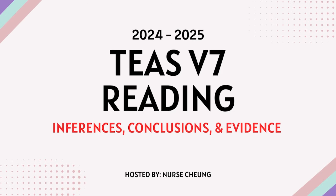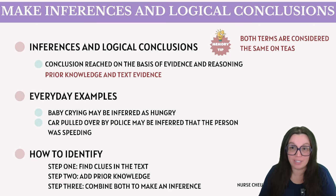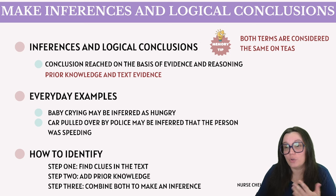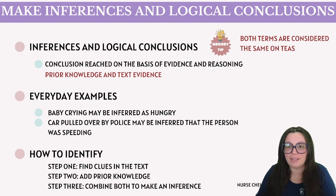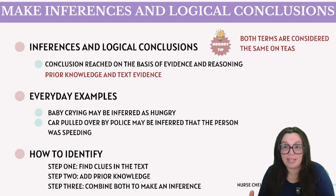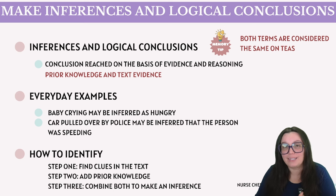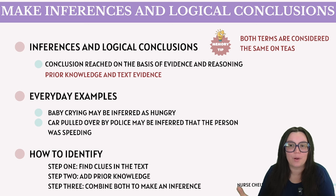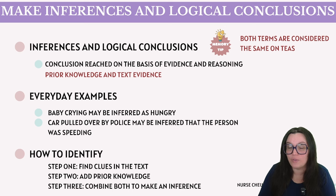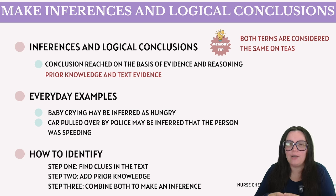Next, let's talk about making inferences and logical conclusions. An inference and drawing a logical conclusion is essentially a conclusion drawn by combining evidence and logical reasoning — both terms are considered the same on the TEAS. In our daily lives, we often unconsciously infer things using cues in our environment. For instance, you might deduce that a baby is hungry if they're crying, or that someone was speeding if they were pulled over by police. To apply this skill in reading: first, identify clues in the context of the text as evidence; next, merge those clues with your existing knowledge from real-world situations; and finally, synthesize that information to draw a conclusion.